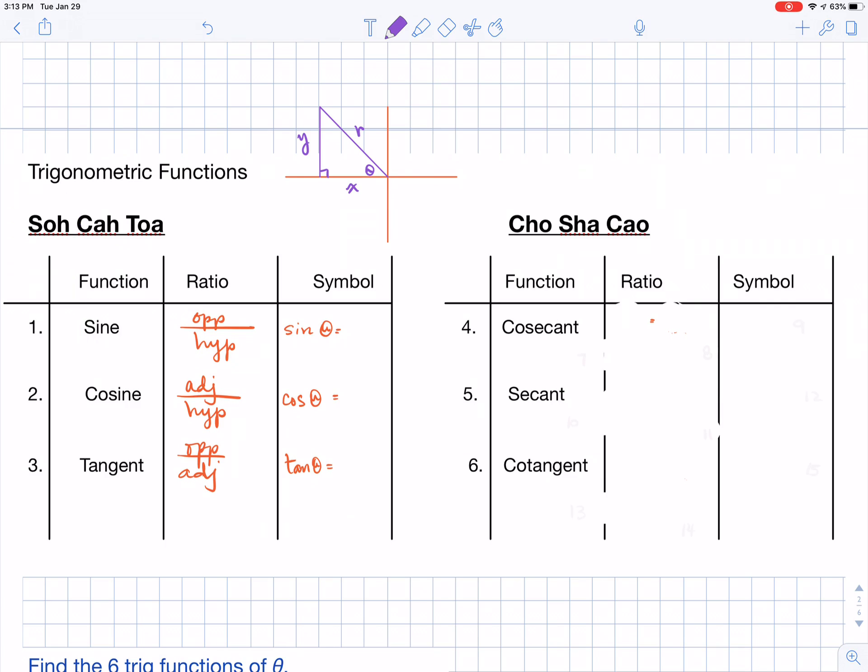All right. Now, let's discuss what I like to call the evil twin brother, Cho Shakao. And I really don't even use Cho Shakao's name very much. Let's talk, first of all, about what the ratio is.